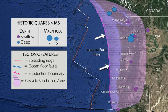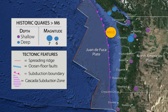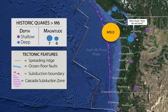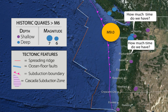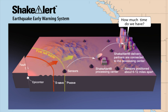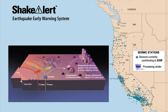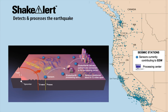Earthquakes can occur in a variety of ways in the Cascadia subduction zone. The complex plate tectonics of the region present challenges and opportunities for earthquake early warning. How much warning time can we expect? The ShakeAlert Earthquake Early Warning System, now operational in California, Oregon, and Washington, uses a network of ground motion sensors to detect earthquakes.